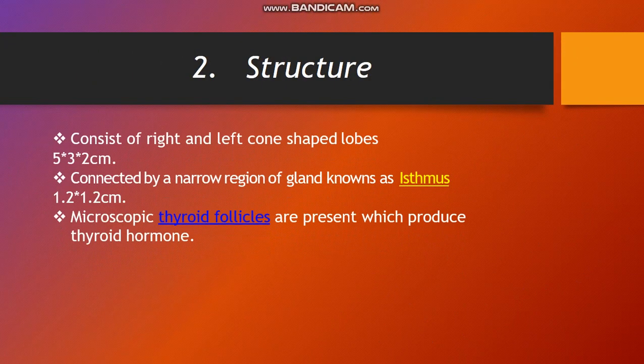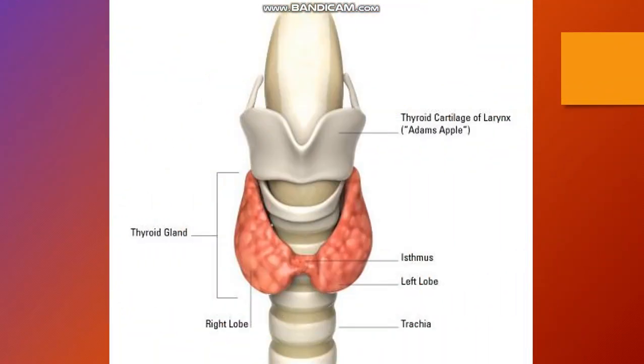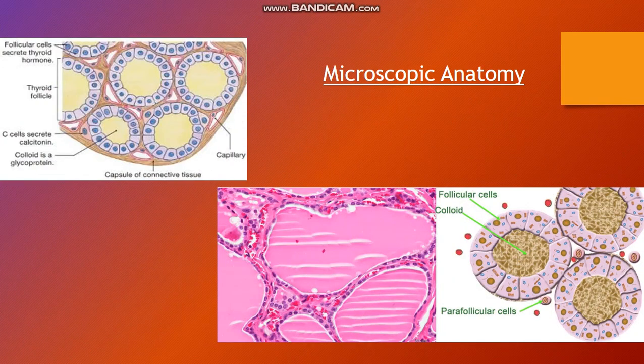Regarding structure, the thyroid gland consists of right and left cone-shaped lobes, approximately 5 cm by 2–3 cm by 2 cm each, connected by a narrow region known as the isthmus, approximately 1 cm by 2 cm by 1.2 cm. Microscopic follicles are present which produce thyroid hormone. Looking here: this is the thyroid cartilage of the larynx — Adam's apple — these are the lobes, right and left, with the isthmus, and the trachea lying behind with its C-shaped cartilages.